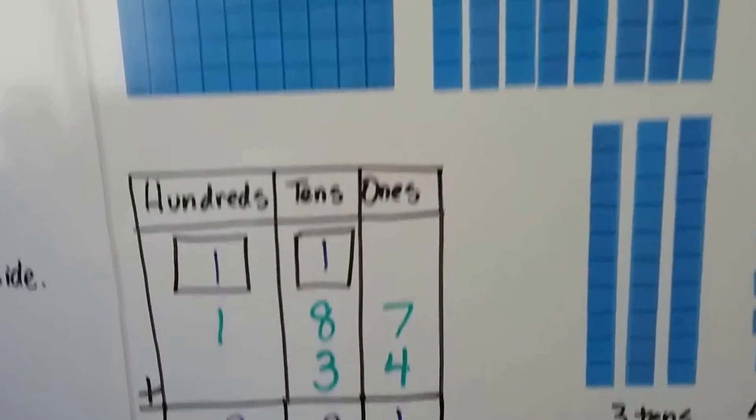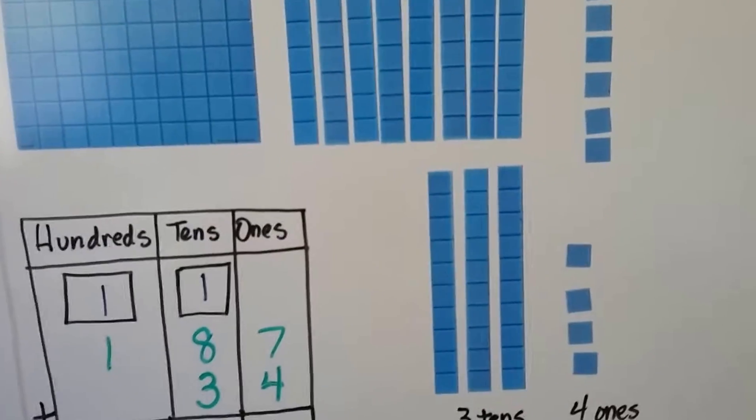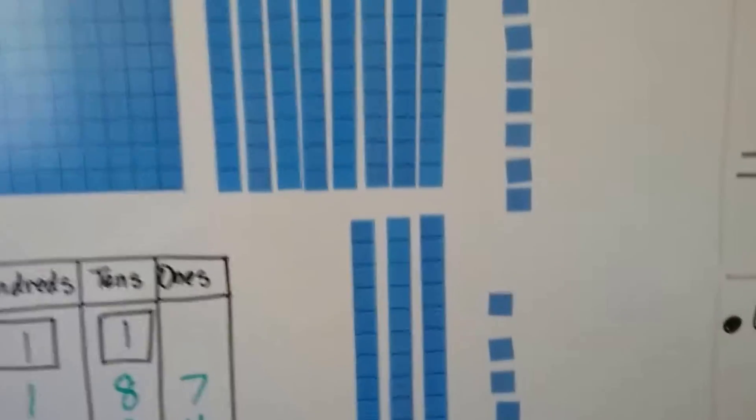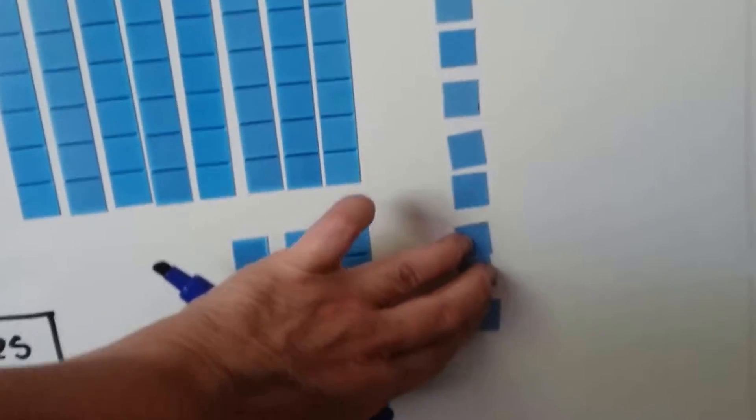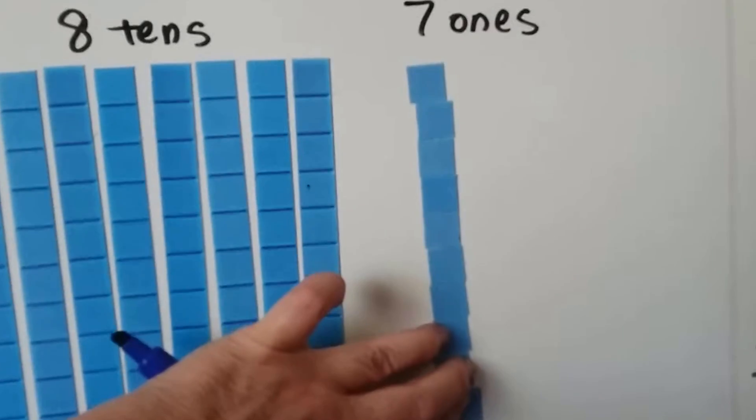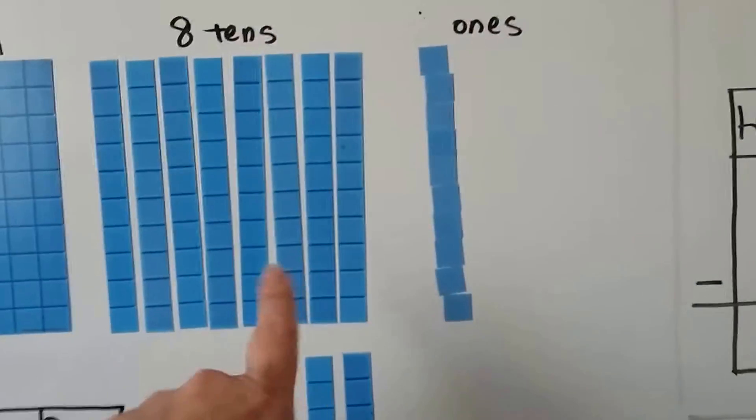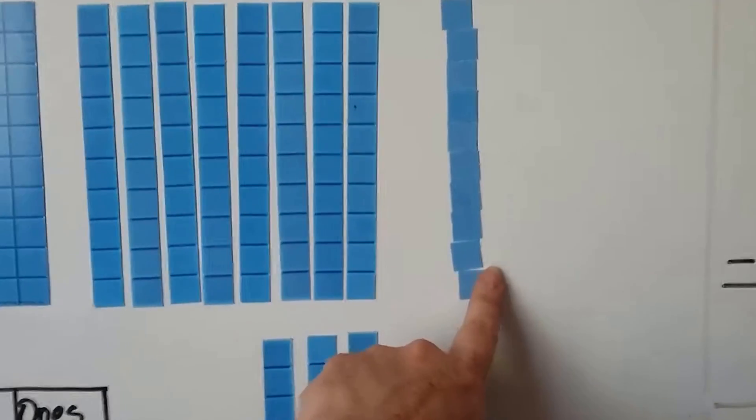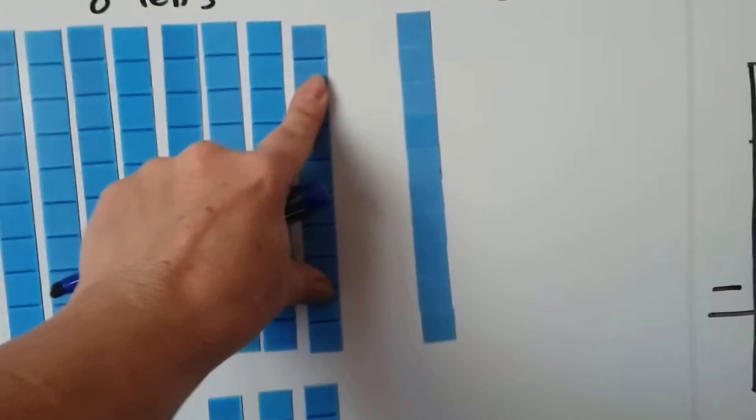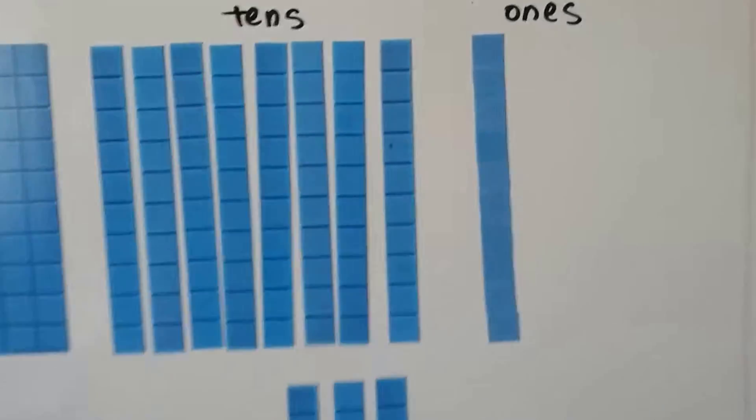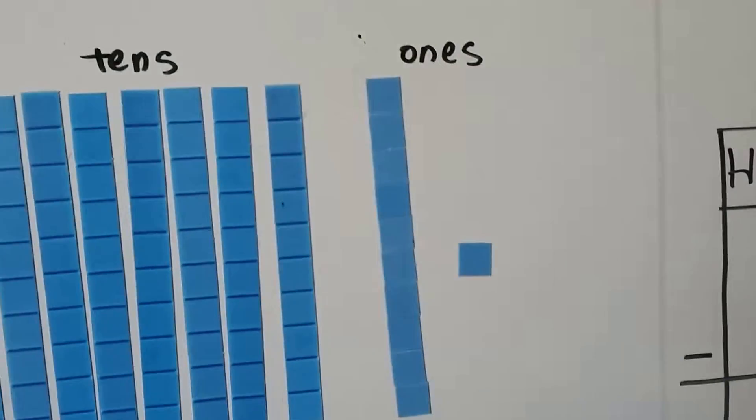So what's happening is we had this 187 and we were adding this 34 to it. What we did was we took 3 of these 1s and moved it up here so we don't have 7 ones anymore. We've got a 10. It's the same length as these tens.